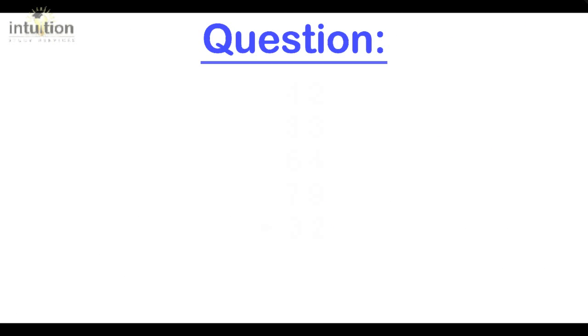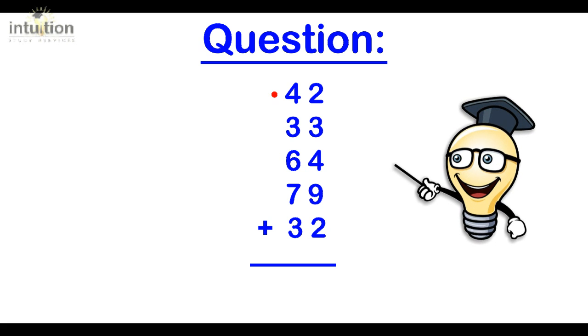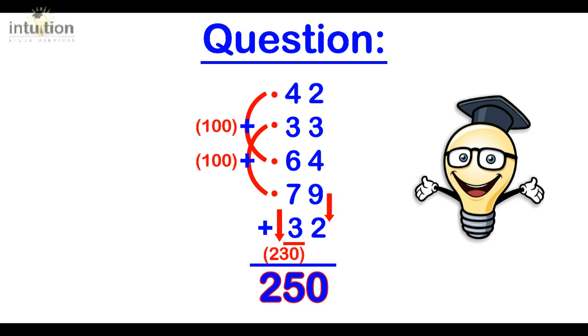Okay so let's go back to the question we had in the beginning. Now we can add these numbers effortlessly. The 4 and 6 make 100, 7 and 3 make another 100, so that's 200. Add the 3 here makes 230. In the units, since we don't have any complements, we just add cumulatively to the 230: 232, 235, 239, 248, and 250. And there we go.